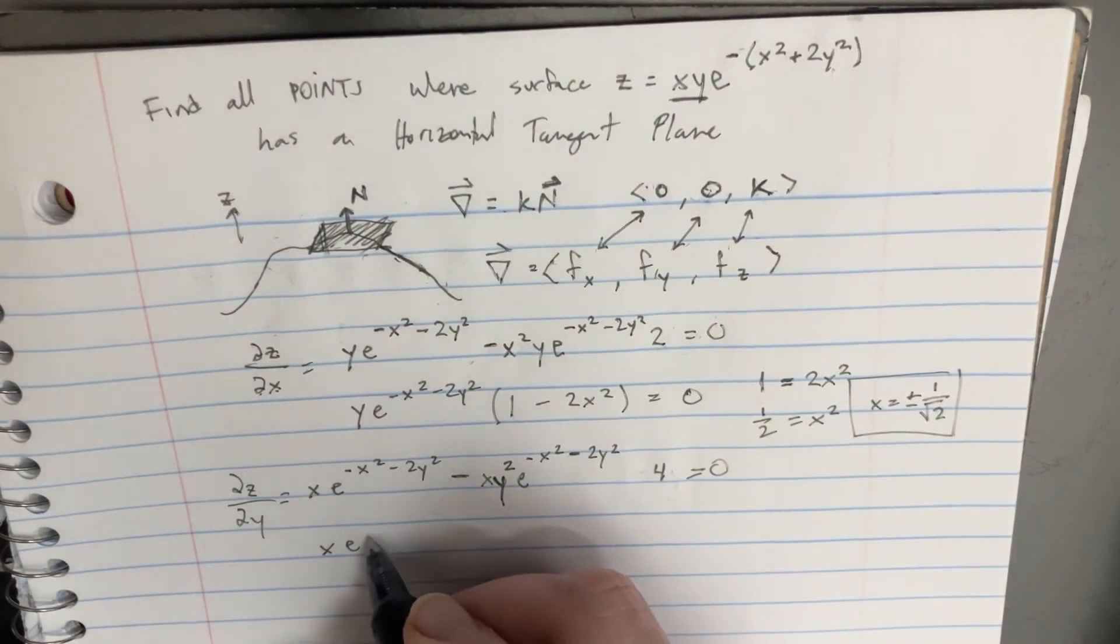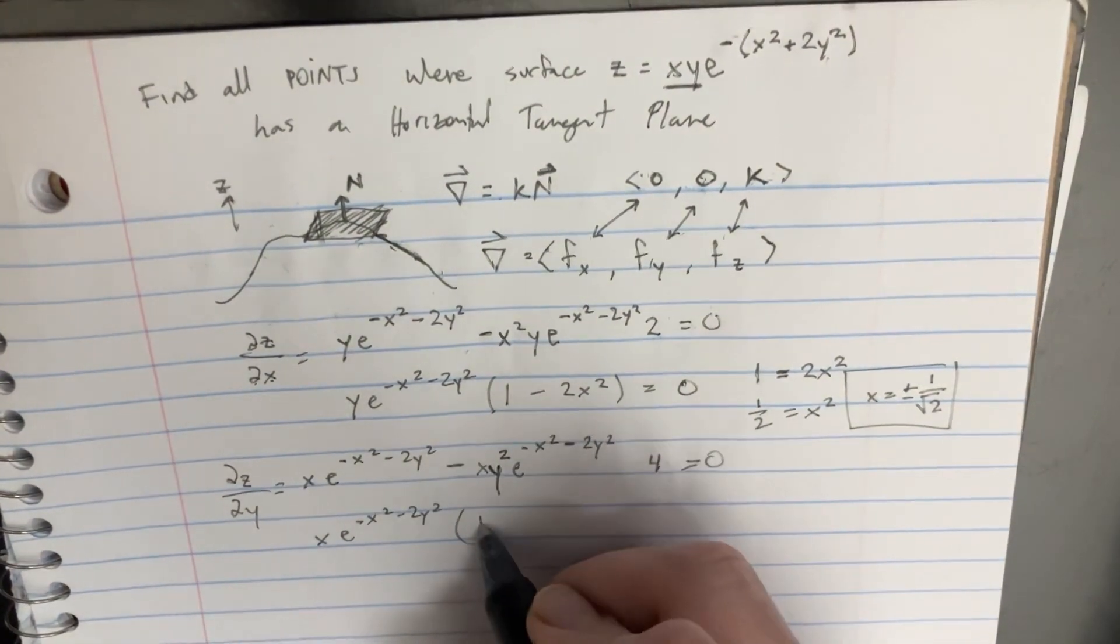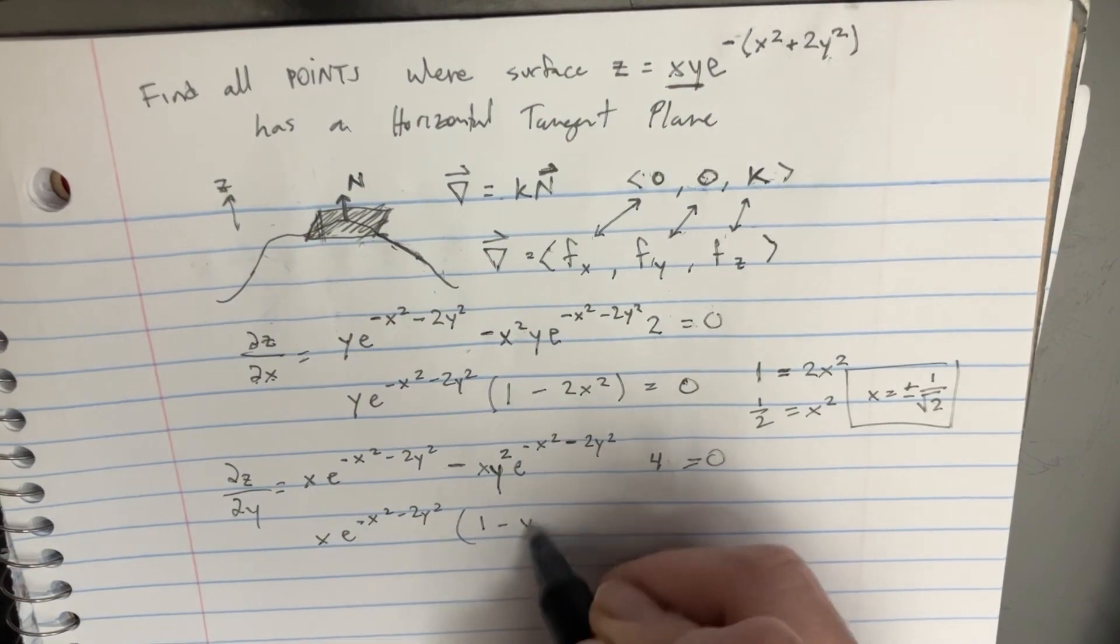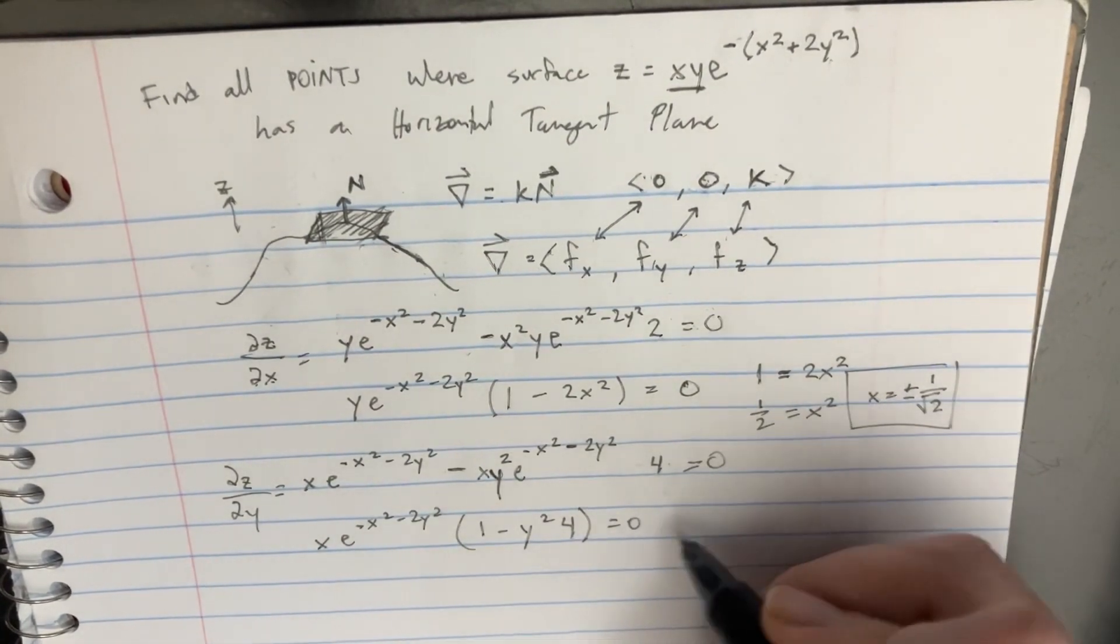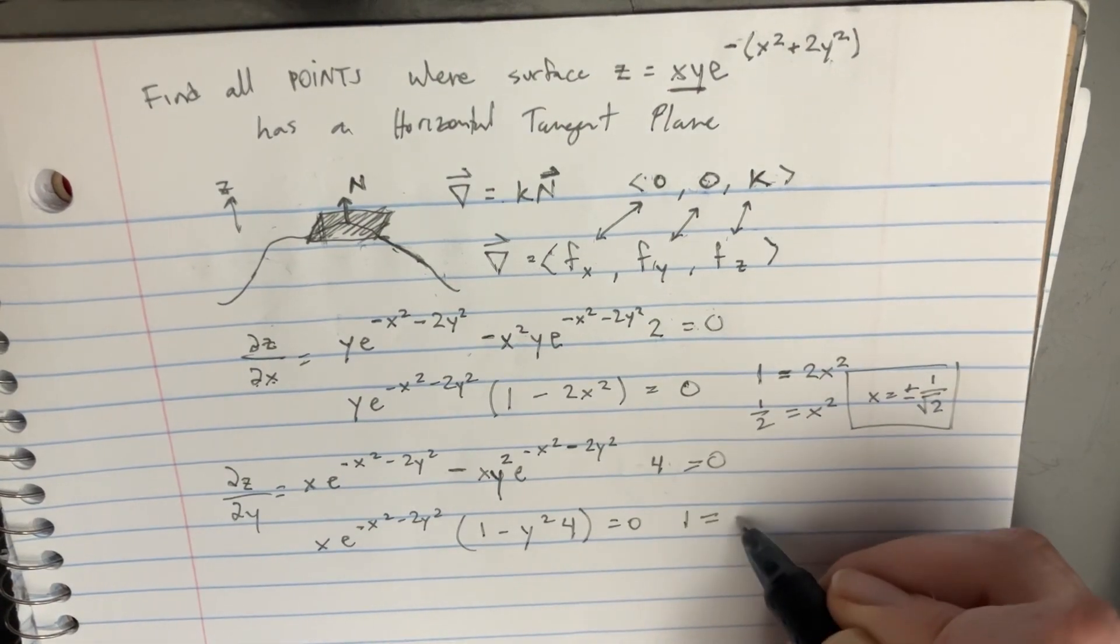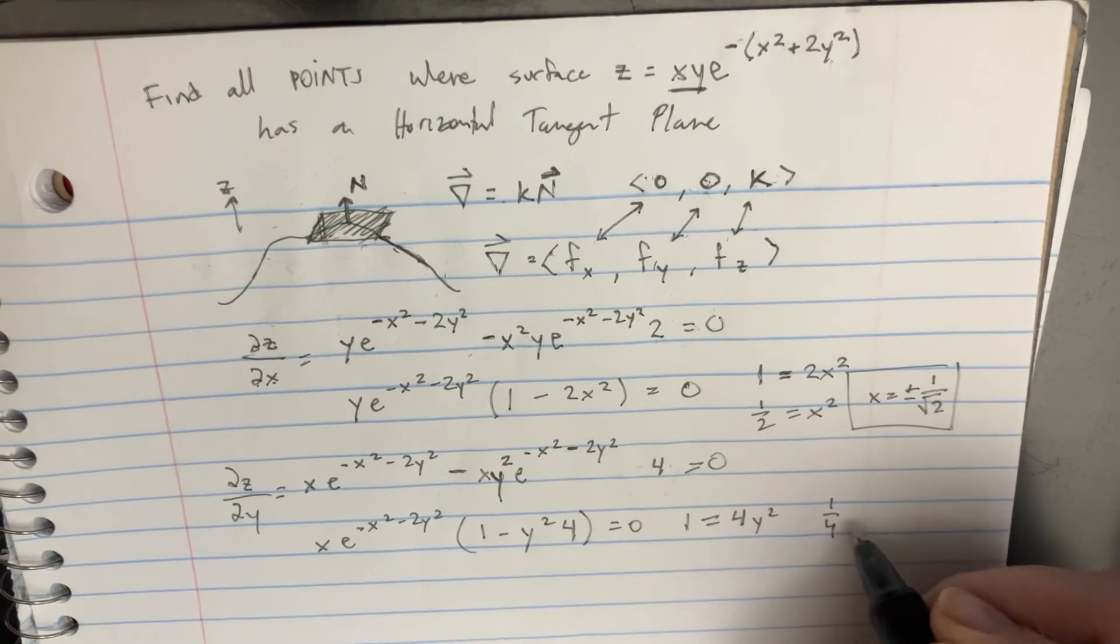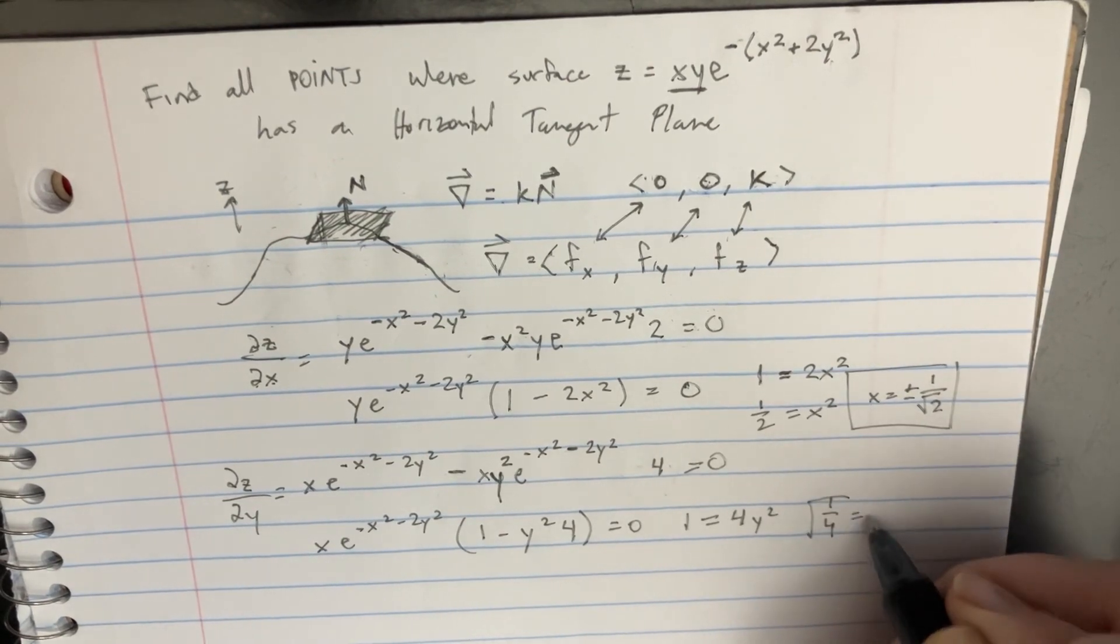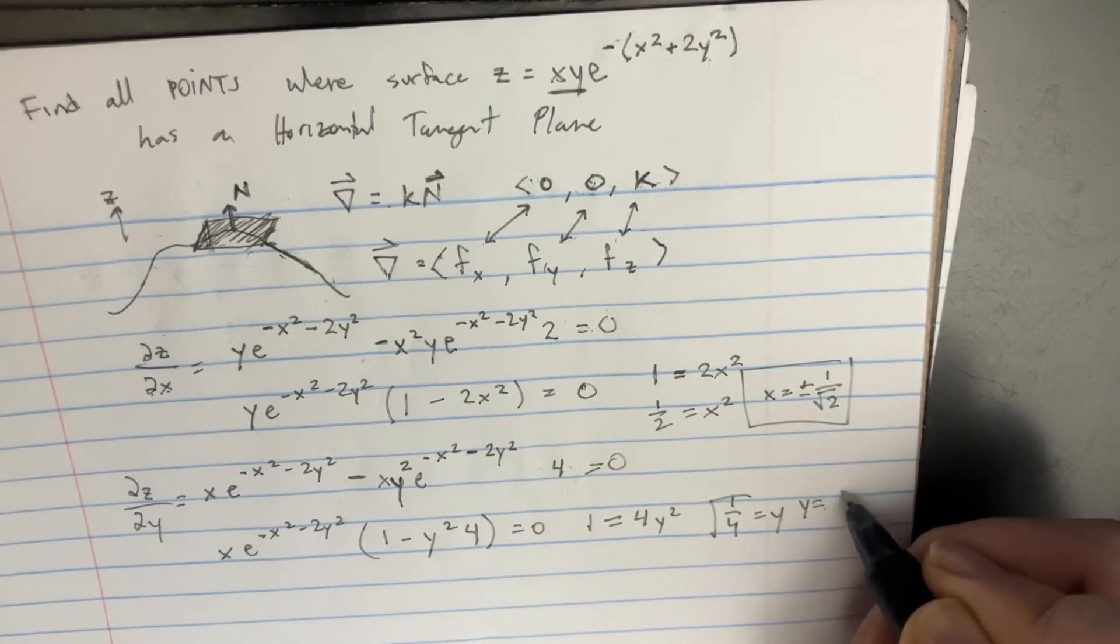So x, negative x squared, minus 2y squared. If you pull the parentheses here, y squared. And there's a 4 there. Equals 0. We can rearrange this to say 1 equals 4y squared. So it's kind of going to be like that. So y is equal to plus or minus 1 over 2.